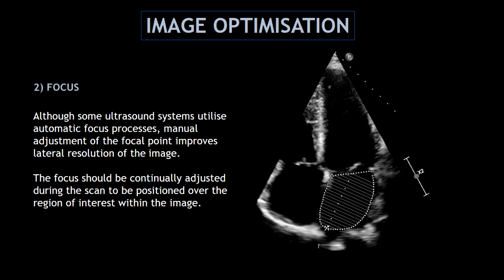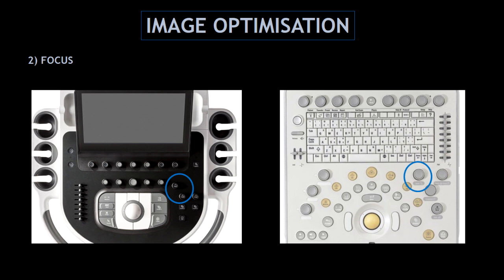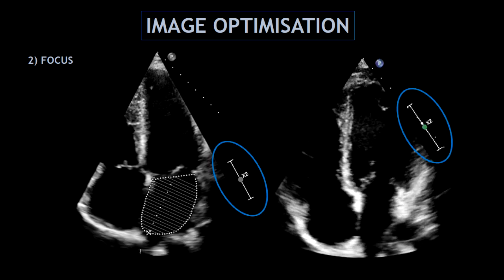Our next feature is the focus. Even when some systems utilize an automatic focus, manual adjustment of the focal point improves lateral resolution of the image. The focus should be continually adjusted during the scan to be positioned over the region of interest. On the left side we have the Philips Epic and on the right side we have the Philips CX50 — in both keyboards, the focus button is on the right side. Here I'm showing you how I move the focus during the scan: on the left side I'm adjusting the focus to concentrate on the left atrium, and on the right side, I'm adjusting the focus to concentrate on the left ventricle.